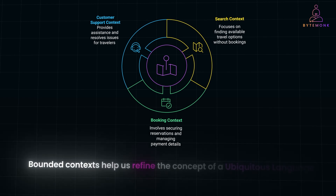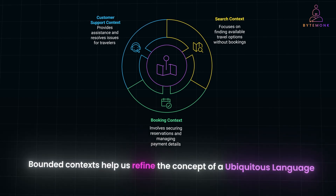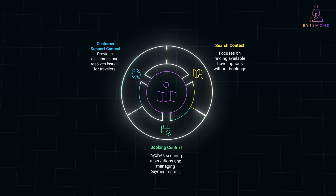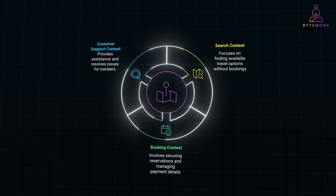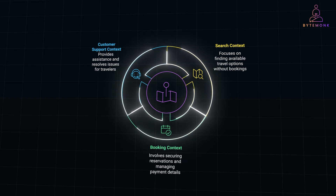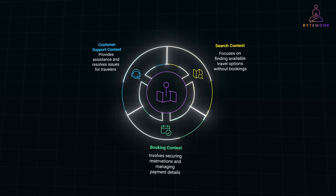Bounded contexts help us refine the concept of ubiquitous language. A ubiquitous language isn't universal or meant to be applied everywhere across the organization. Instead, it's specific and valid only within the boundaries of its bounded context. Within a bounded context, the ubiquitous language is tailored to describe the model relevant to that particular domain. Since a model exists to address a specific problem, the language tied to it must also stay within the scope of that problem. A ubiquitous language cannot exist or function effectively without a clear and explicit bounded context defining its purpose and applicability.